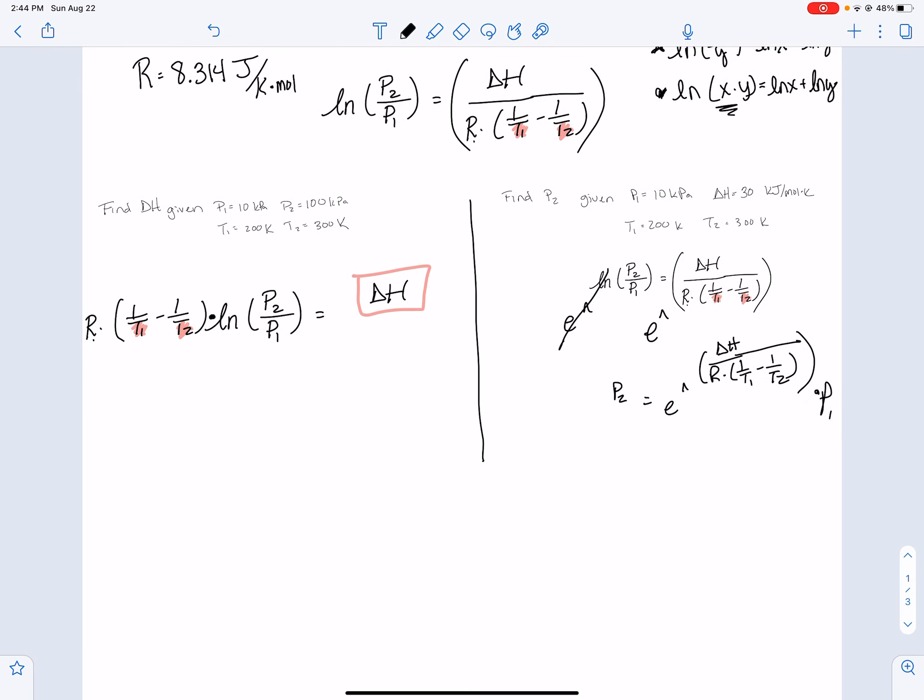So then all you have to do is make sure that you're putting in things correctly. Remember, your delta H right here. When you solve this, as long as you're using the 8.314 joules per Kelvin mole, this is going to come out in joules and almost always it's going to come out in joules per mole, and they're almost always going to ask you to then convert it to kilojoules. So just be aware.